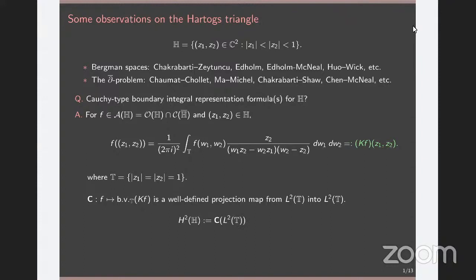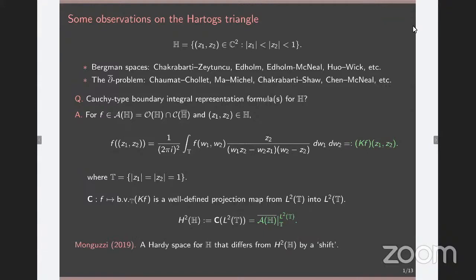This projection map is actually an orthogonal projection. There is another way of getting to the space: it is also the L2 closure of the restriction of the triangle algebra to the distinguished boundary. Around the time we made these observations, a preprint came along on the archive by Mungusi — the first time we saw anybody discuss a Hardy space for the Hartogs triangle. His space was obtained differently and turned out to be different from ours. Both spaces can be expressed in terms of Fourier series expansions and can be compared. What we observed was that our space and his differ by a shift operator. The construction I'm going to discuss will explain this discrepancy and show that this is not an anomaly — it is actually a feature.